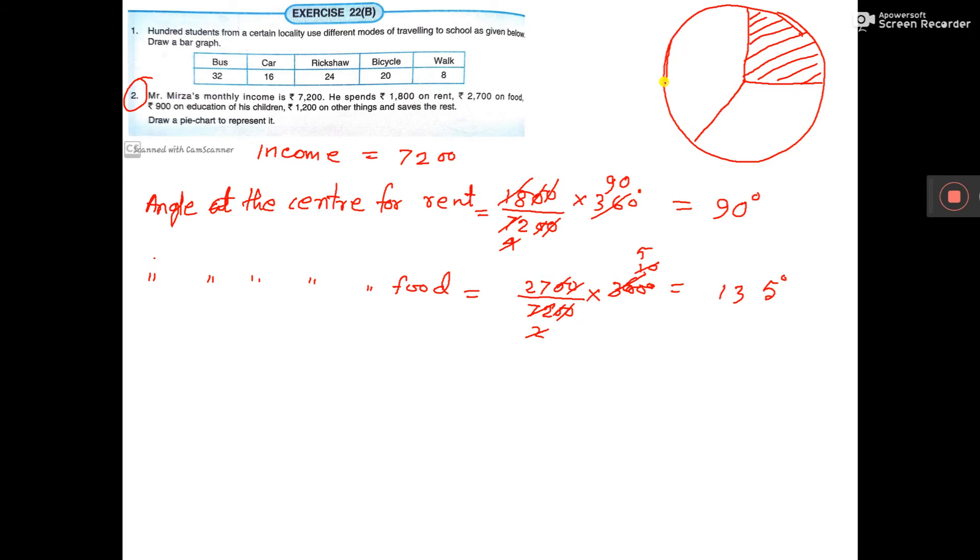So here you have to draw 135 degrees like this and here also shade in this way. So this is for food. Then next one is angle at the center for education.